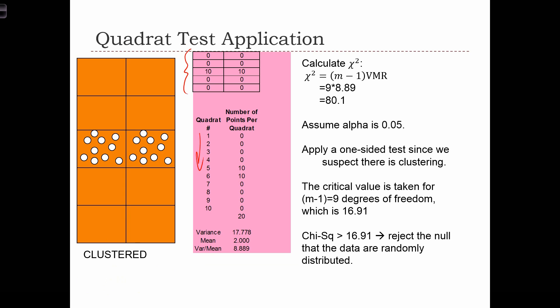These are the quadrats, and here we have the number of points per quadrat. We calculate the variance, we calculate the mean, we calculate the variance to mean ratio,